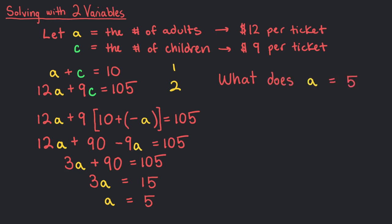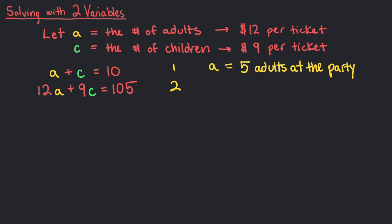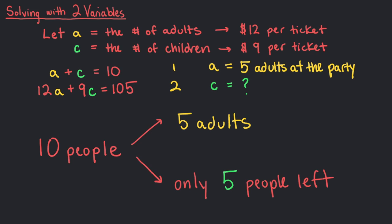What does a equals 5 mean? That's right, we now know that there are 5 adults at Tom's party. So how many children are there? Well, if there are 10 people in total, and 5 of them are adults, the other 5 people must be children.